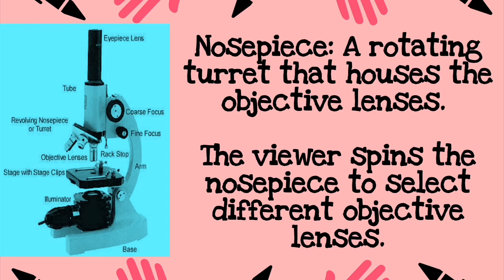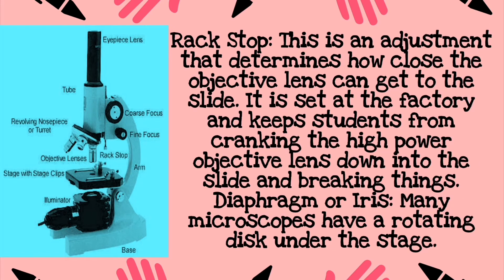Next is the nosepiece, a rotating turret that houses the objective lenses. The viewer spins the nosepiece to select different objective lenses. The rack stop is an adjustment that determines how close the objective lens can get to the slide. It is set at the factory and keeps students from cranking the high-power objective lens down into the slide and breaking things.